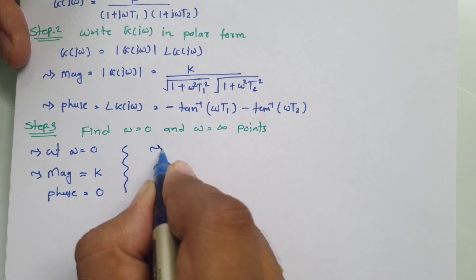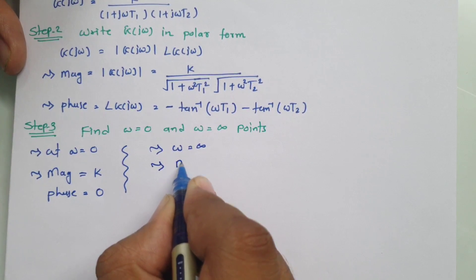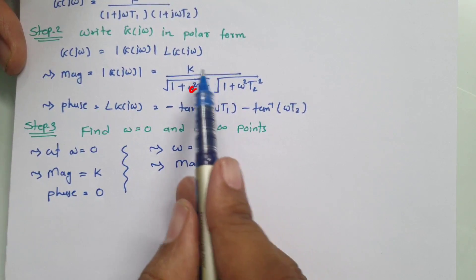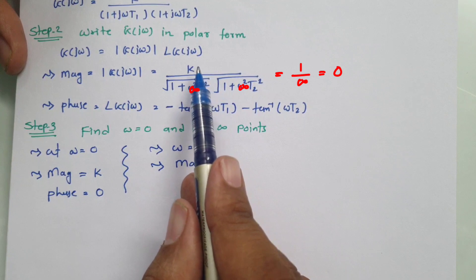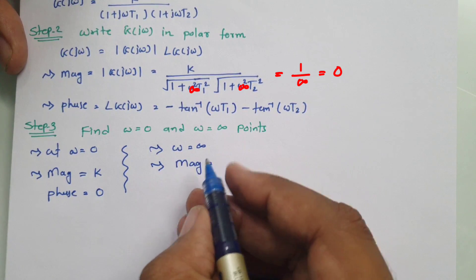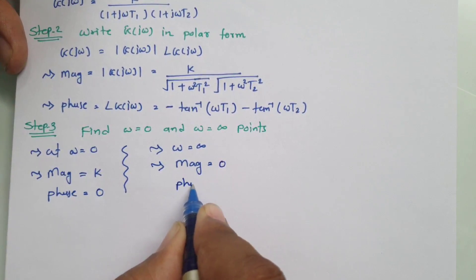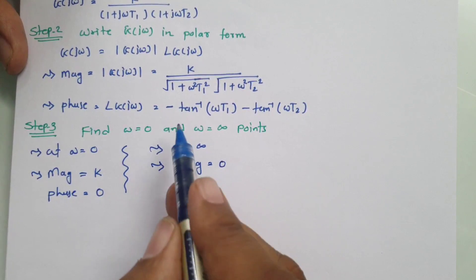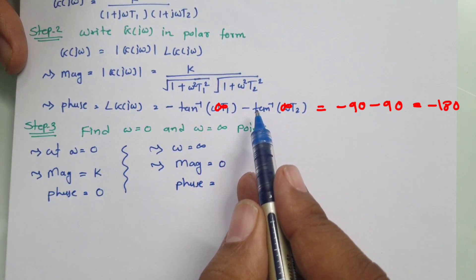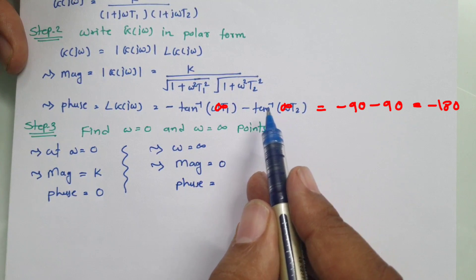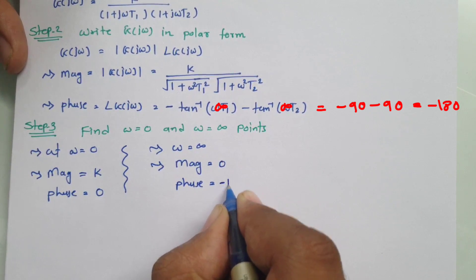Now we find the point at ω equals infinity. The magnitude is k divided by infinity, which equals 0. For the phase: minus tan⁻¹(∞) is minus 90, and again minus tan⁻¹(∞) is another minus 90. So phase equals minus 90 minus 90, which equals minus 180 degrees.